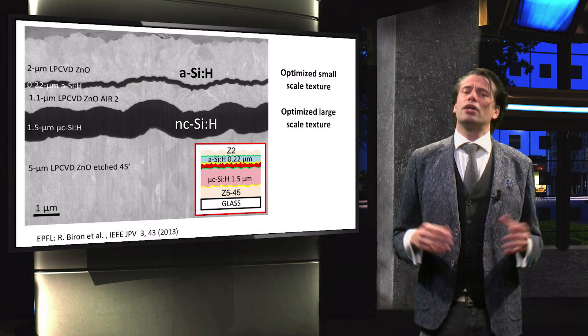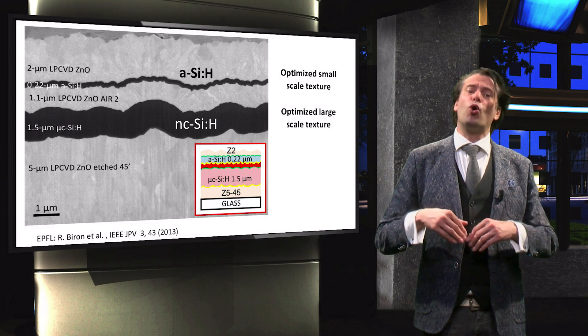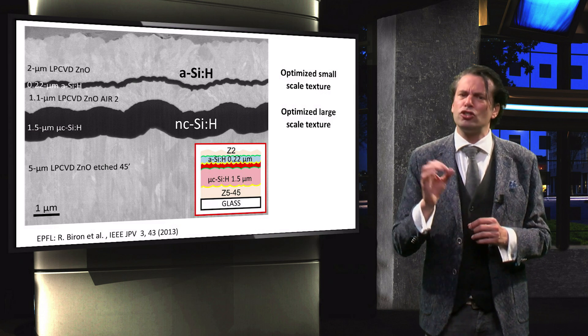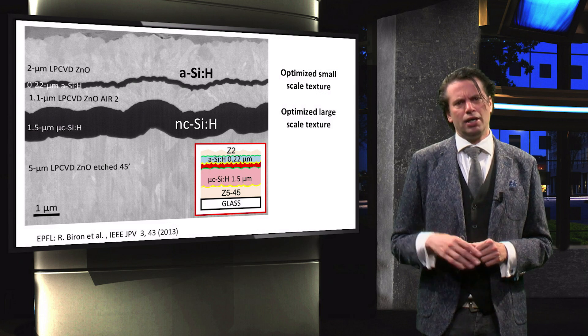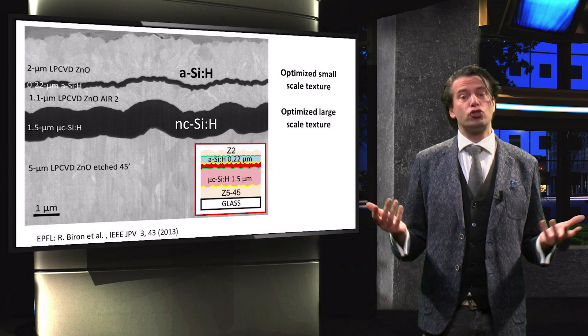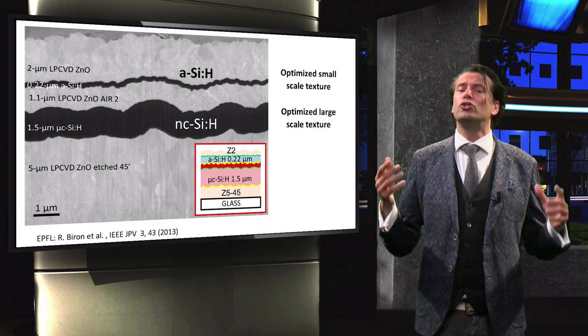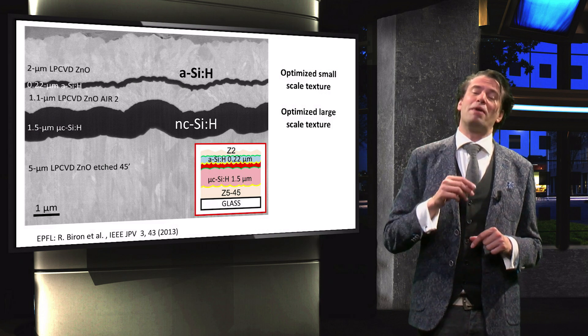As you can see, the large scale texture of the substrate has been adapted through all the layers of the device and the small scale texture has been adapted by the top cell. This is an example of modulated surface texture and facilitates good light trapping in both the top and bottom cell.